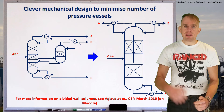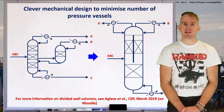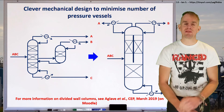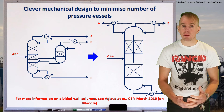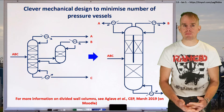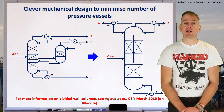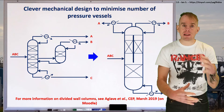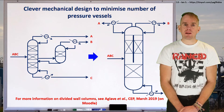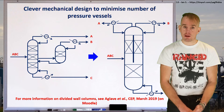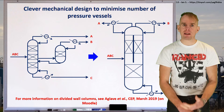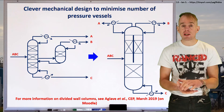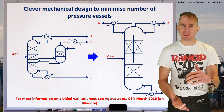So neat mechanical design, innovative mechanical design here can help to neaten our process and tighten up on the process safety. Now, divided wall columns aren't the only trick you can play with amalgamating column sections together. Go and have a look in the literature at chimney trays, and you'll see how you can actually concatenate lengths of column above one another.